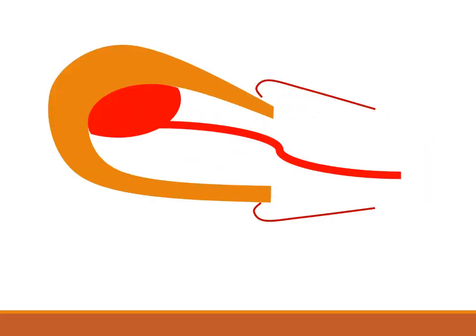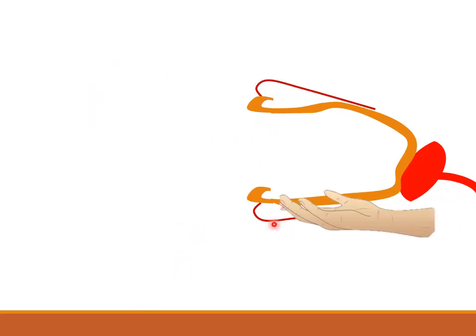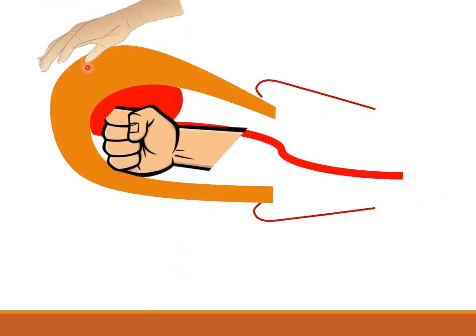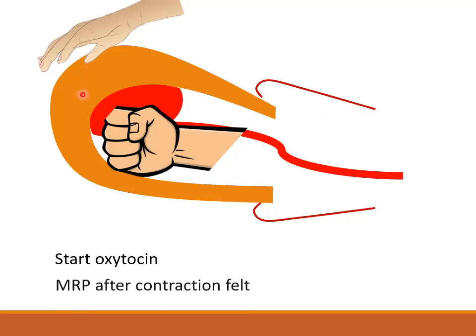To summarize the manual replacement: as inversion occurs, the fundus comes out first and the lateral parts come out last. To replace, start with the part that came out last, hold the fundus — which came out first — and push the sides in slowly. Once replaced, insert a fist into the uterus and place the other hand on the abdomen to hold and stabilize it, then start oxytocin to maintain uterine contraction. Once contraction is achieved, proceed with manual removal of the placenta.